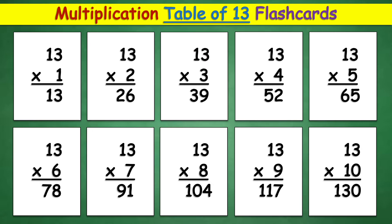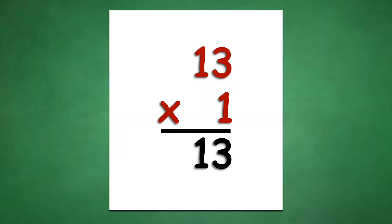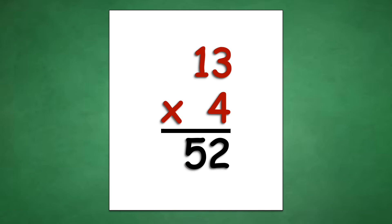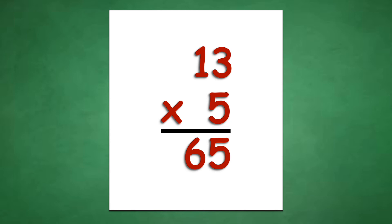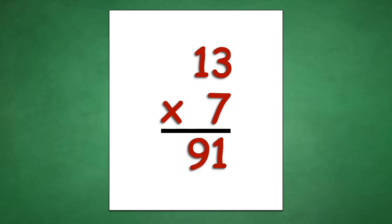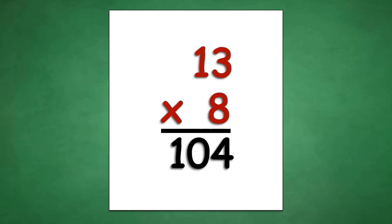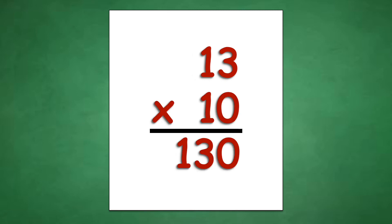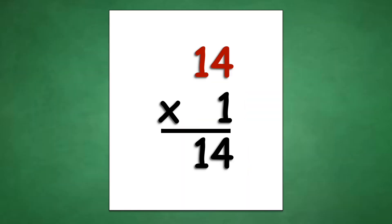Table of 13: 13 times 1 equals 13, 13 times 2 equals 26, 13 times 3 equals 39, 13 times 4 equals 52, 13 times 5 equals 65, 13 times 6 equals 78, 13 times 7 equals 91, 13 times 8 equals 104, 13 times 9 equals 117, 13 times 10 equals 130.